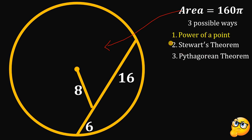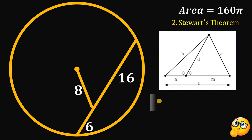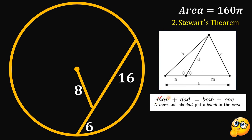Now for our second method: the Stewart Theorem. Given this figure, Stewart's Theorem tells us that M·A·N + D²·A = B²·M + C²·N. To memorize this formula quickly, here is a trick: 'A man and his dad put a bomb in the sink.' So: M·A·N + D²·A = B²·M + C²·N.